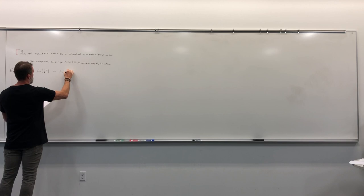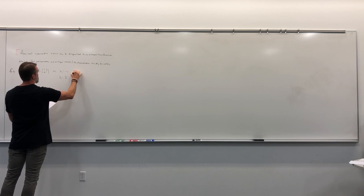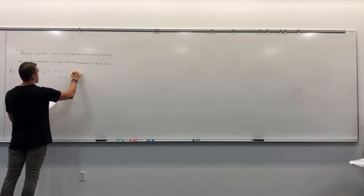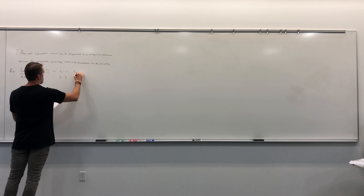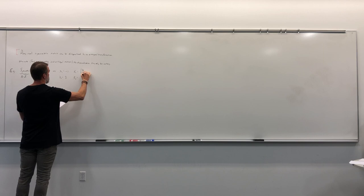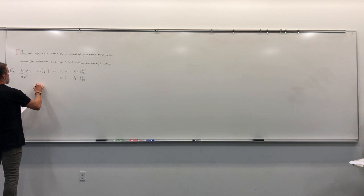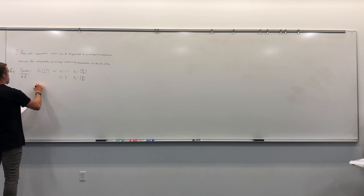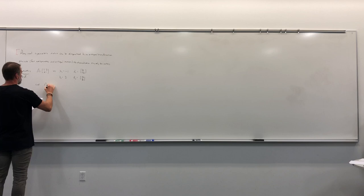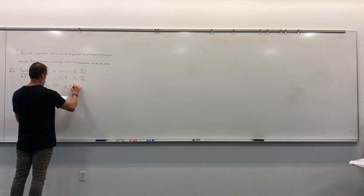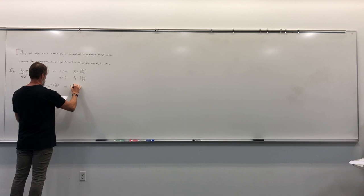We can go ahead and find its eigenvalues: λ₁ = -1, λ₂ = 3. We'll find the normalized eigenvectors associated with them. The first is (1/√2, -1/√2) and the second is (1/√2, 1/√2). So if we were to diagonalize this, we use P⁻¹AP, with P formed by taking these two eigenvectors as columns.